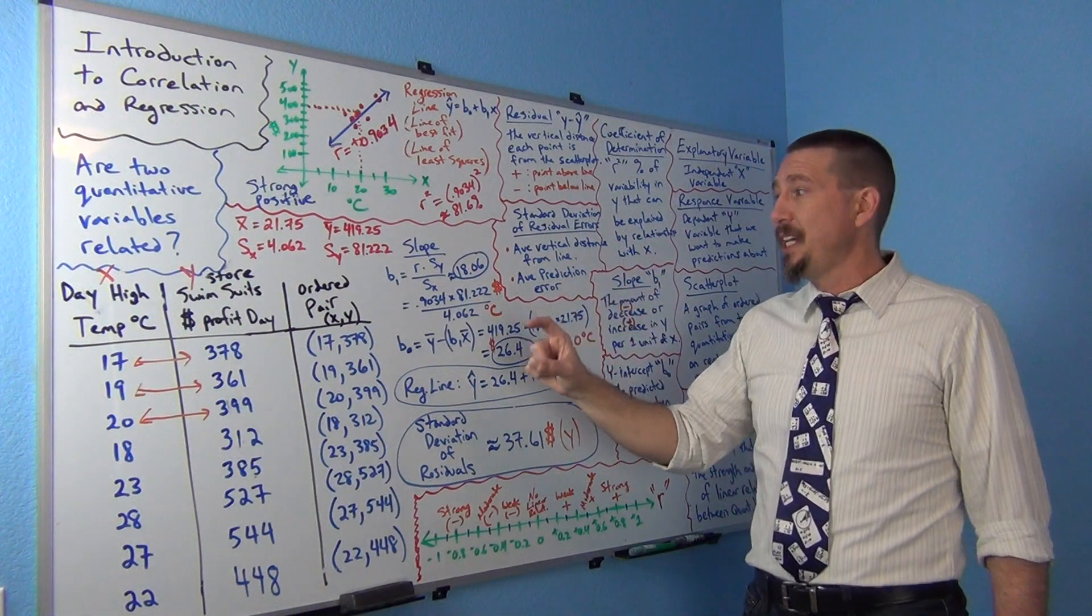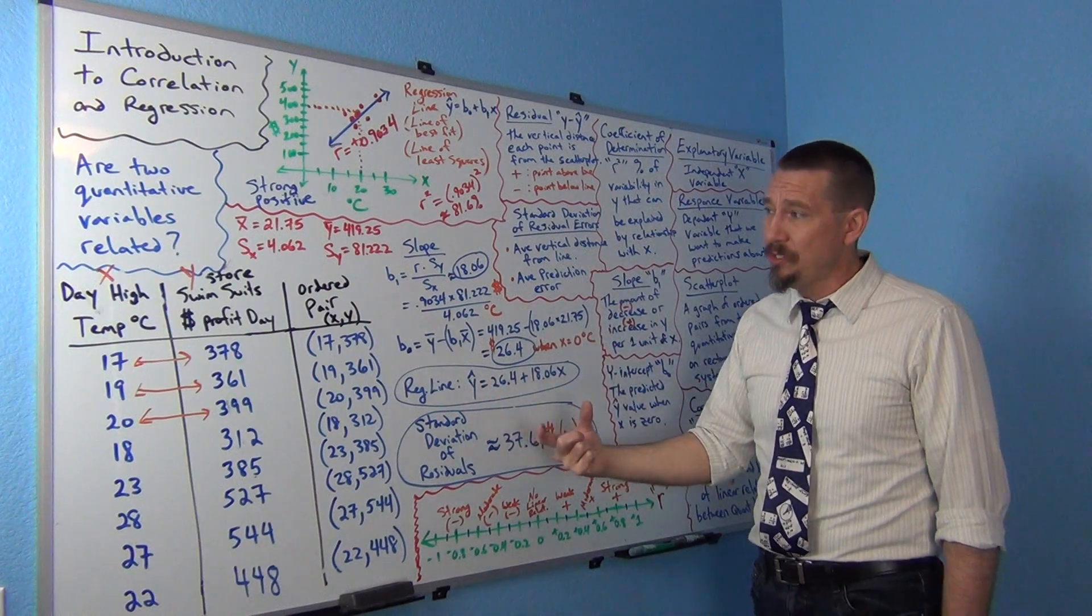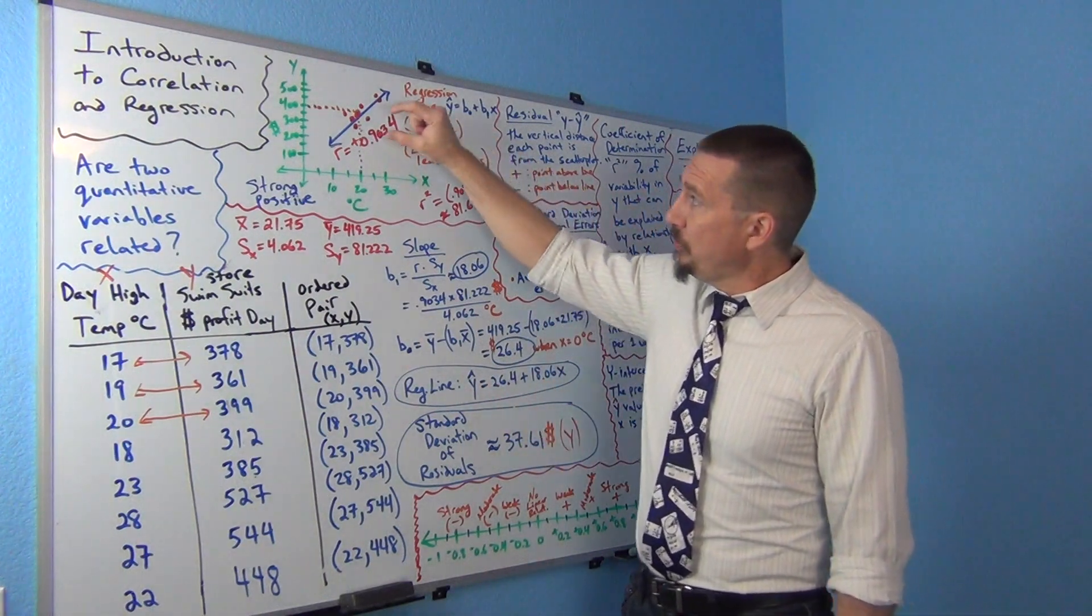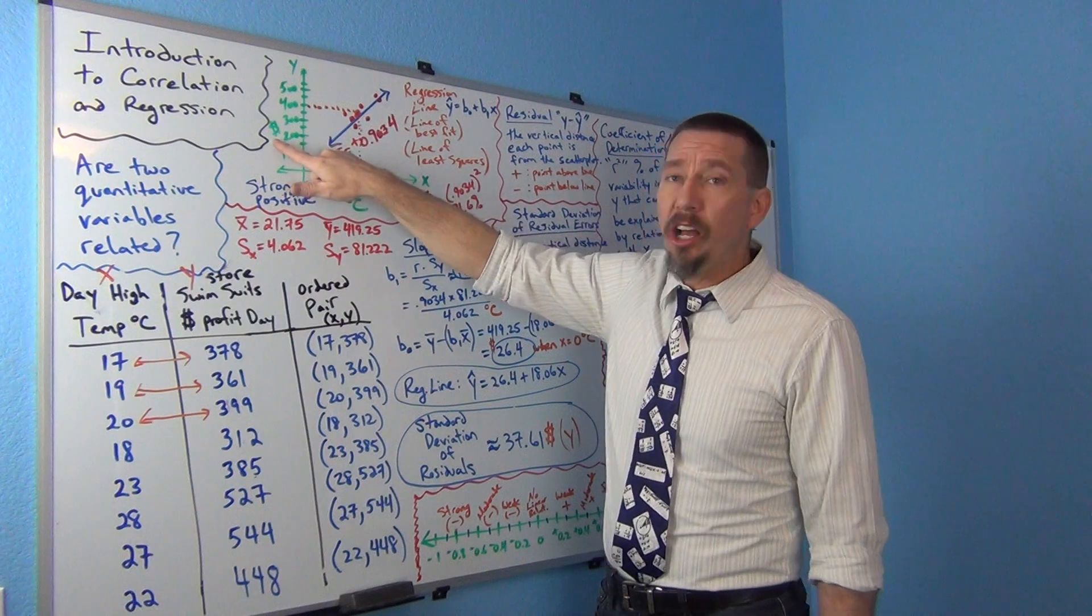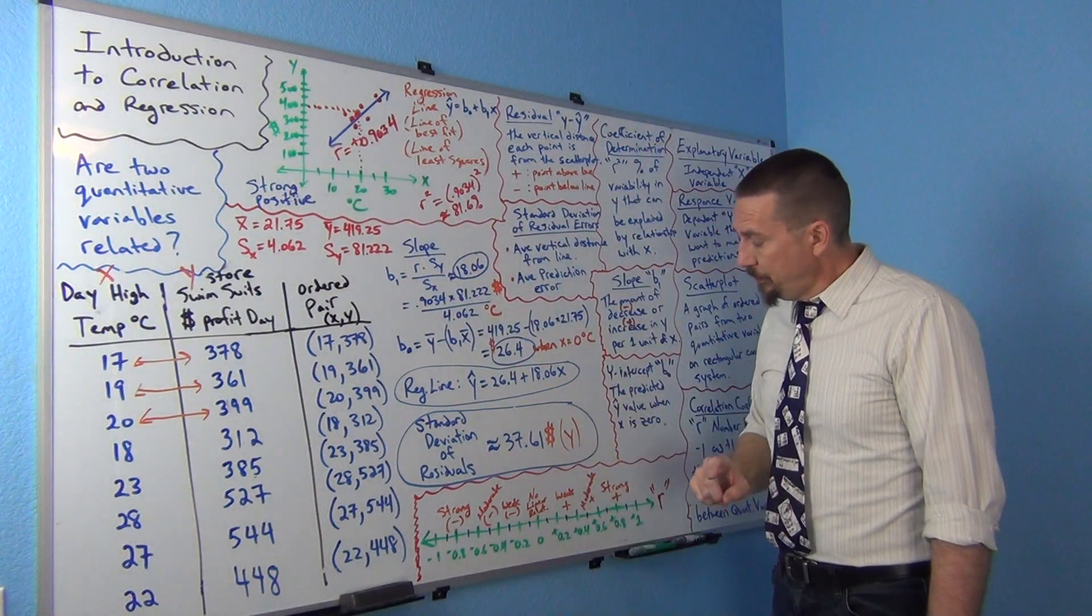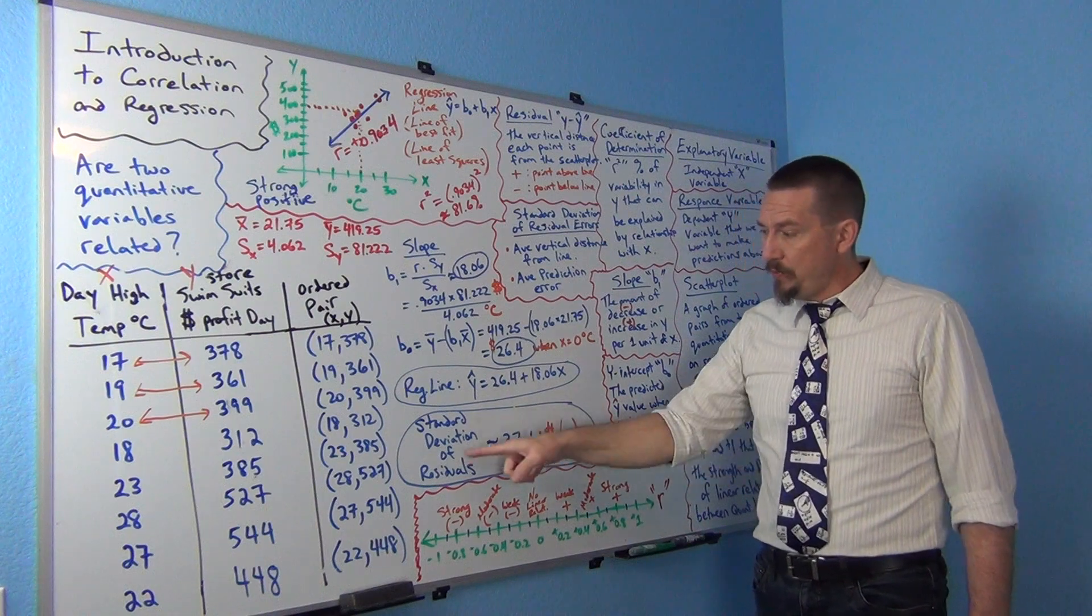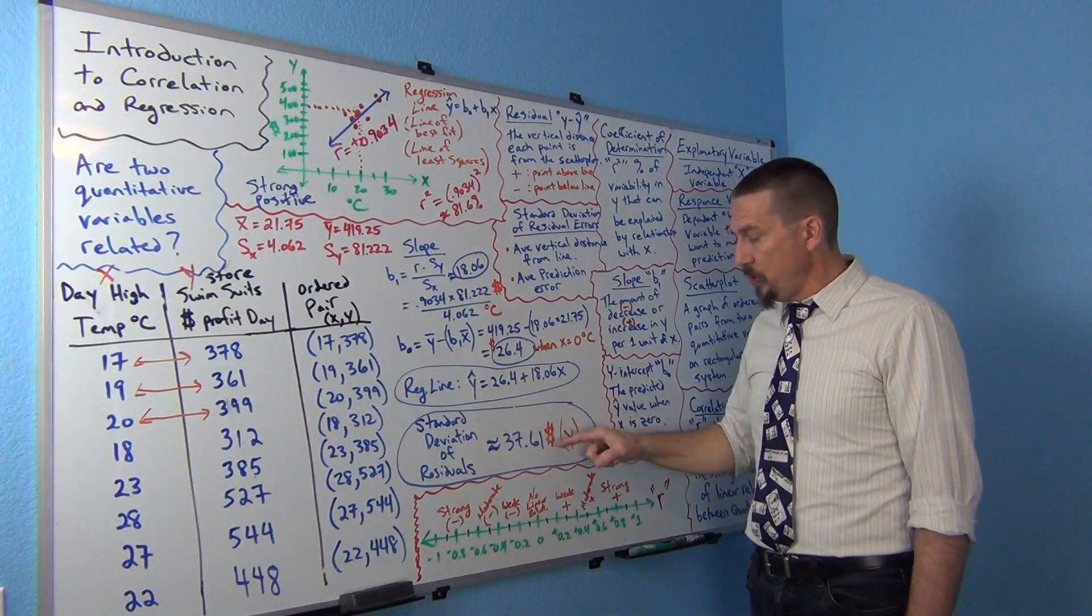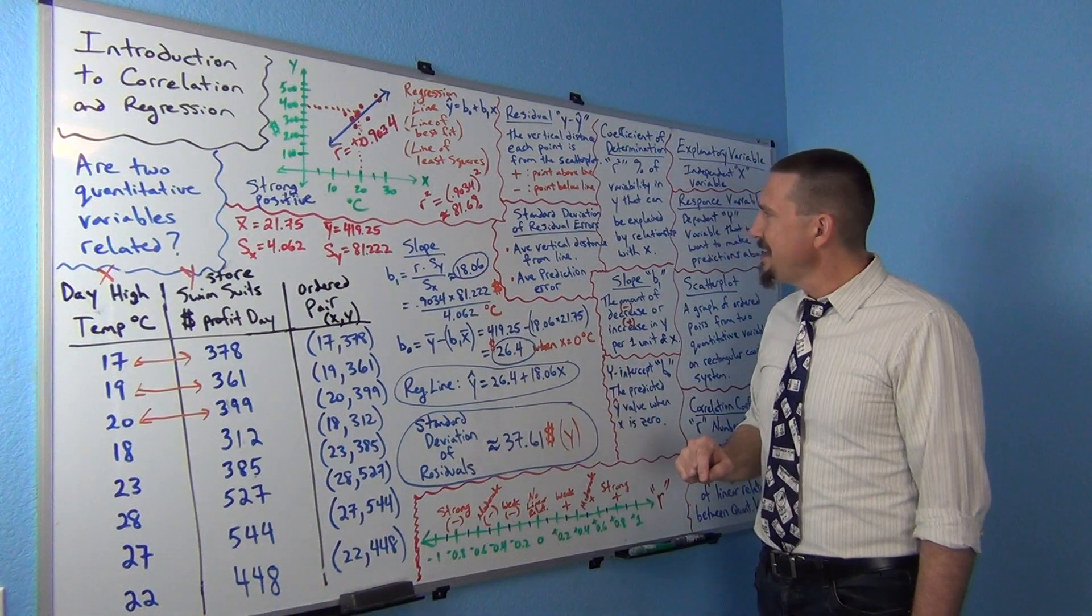Remember I told you in the beginning that y is always the focus of a lot of the calculations. So it's really the vertical distance, so that means it's in dollars in this problem. The standard deviation of residuals is always the same units as the y.